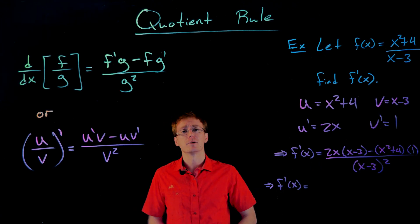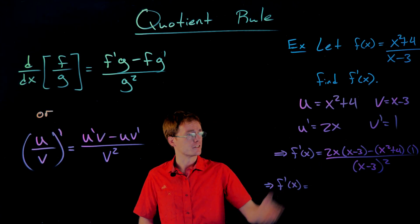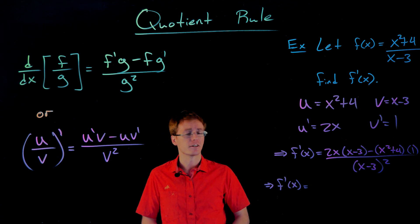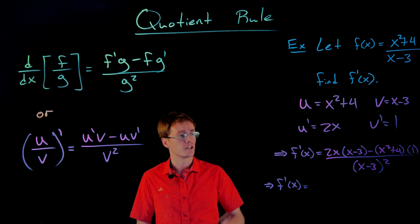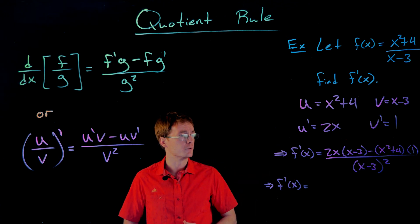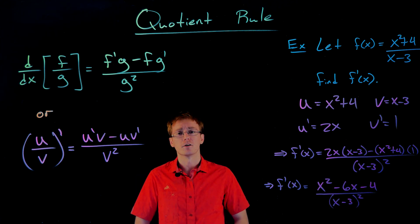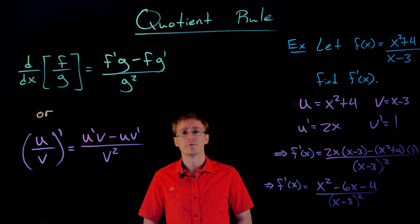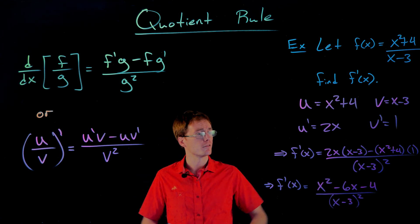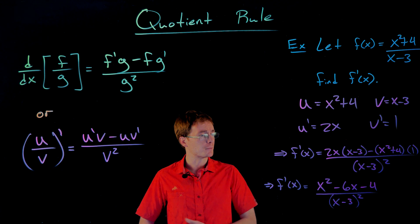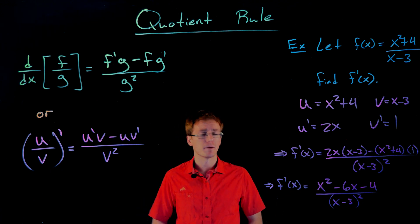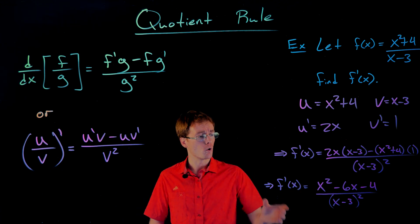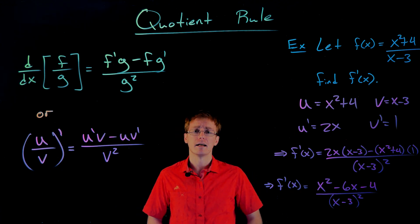So we have the derivative of our function written here. The last thing we can do is simplify it — expand the numerator, combine like terms. Everything expands and combines to give us x squared minus 6x minus 4 over the quantity x minus 3 squared.